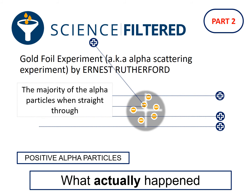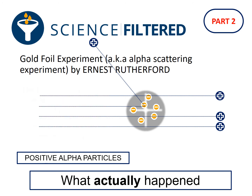So the majority of the alpha particles went straight through, but some were deflected at really extreme angles.